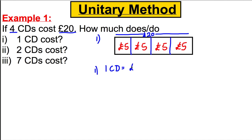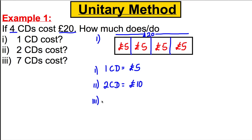So for part one, how much is one CD? Well, one CD is one box, so it's five pounds. Now, having done the first part, how much are two CDs? Two CDs must be two boxes, so it must be ten pounds.